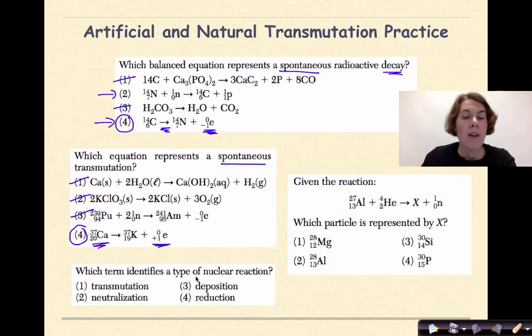Which term identifies a type of nuclear reaction? Transmutation is our answer for this one because we know that we have artificial and natural transmutation. Neutralization goes more with acid-base reactions. Deposition talks about phase change, going from a gas to a solid. And reduction goes along with redox.